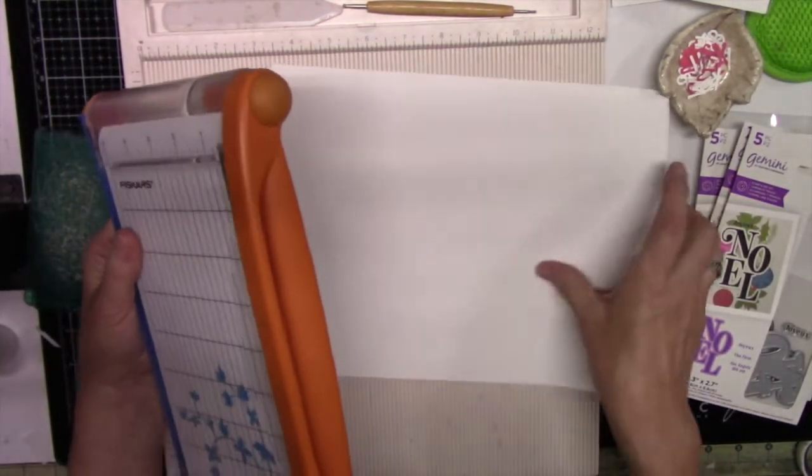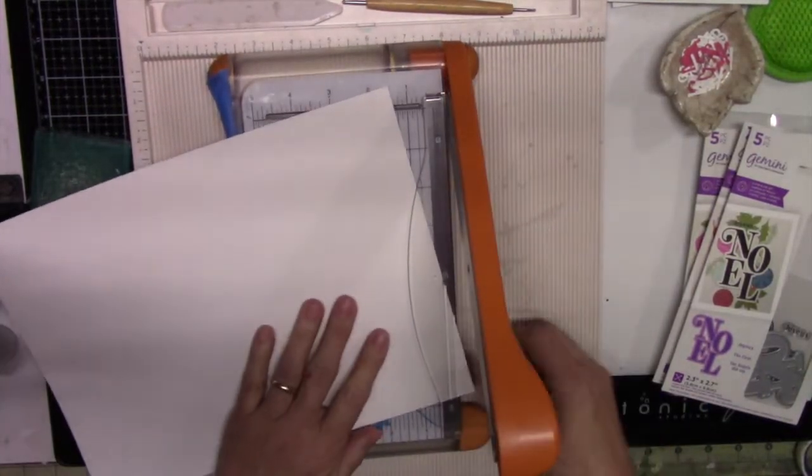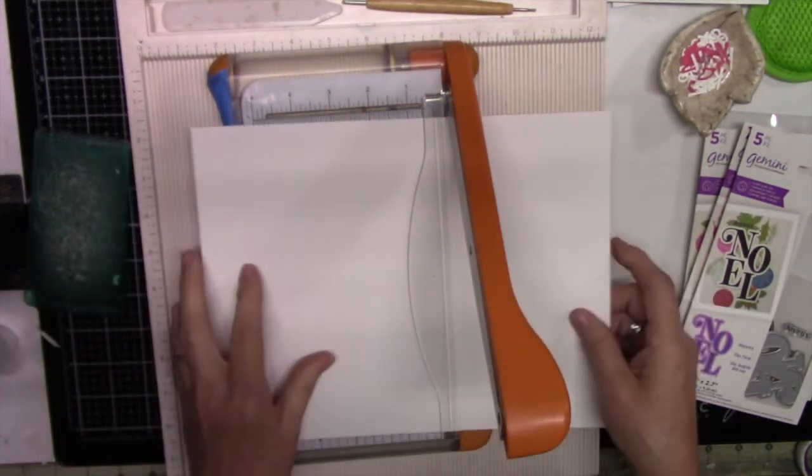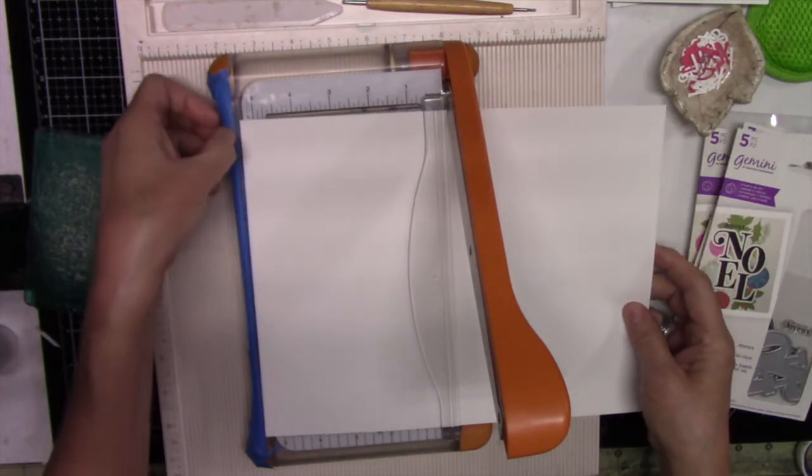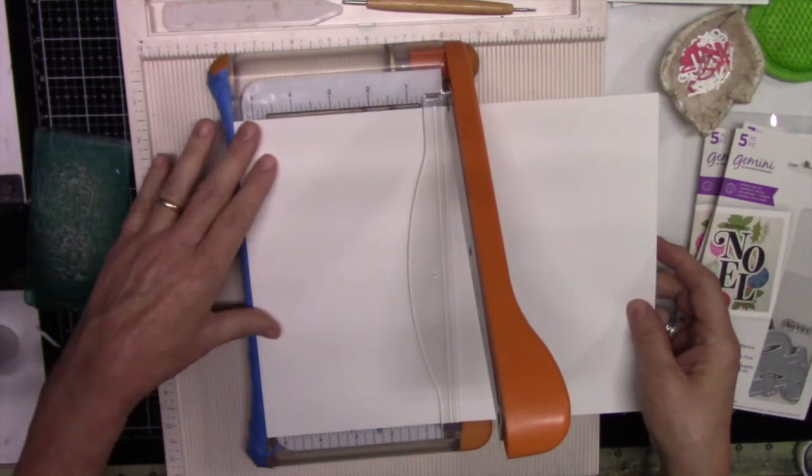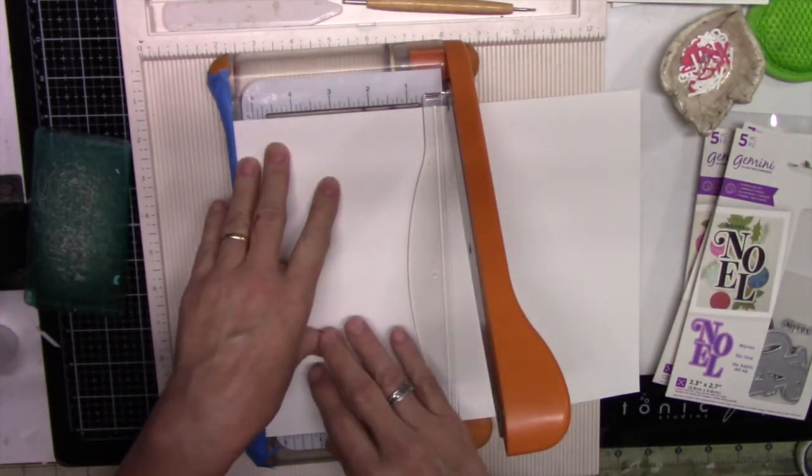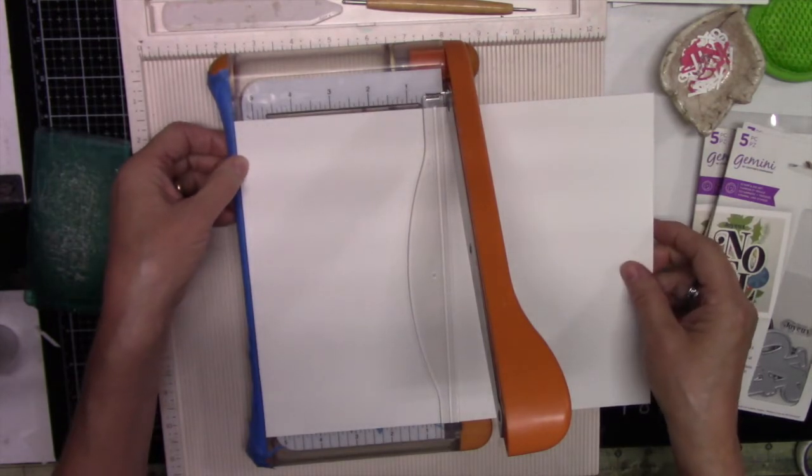So I can put my cardstock on the eleven inch side, I can put my card in here and I do have some adhesive here. I put a tape that helps measure. I measured out five and a half exactly and I put some painters tape.